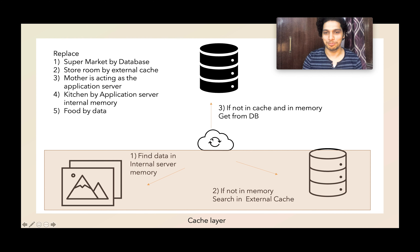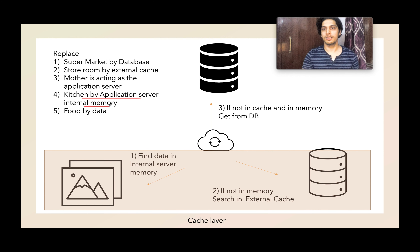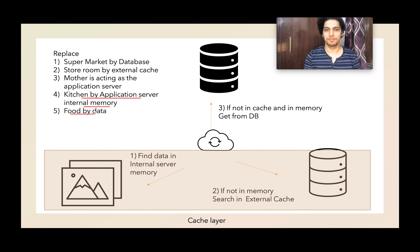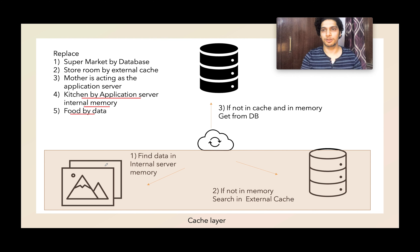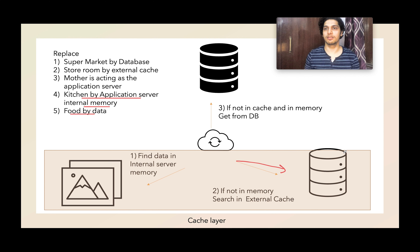Let's replace the storeroom with the external cache, and the mother is acting as the application server — she is the controller. The kitchen is acting as the in-memory storage of the application server, and food can be replaced by data. So how does the application server behave? It tries to find data in its own memory inside the application server. If the data is found, that's well and good — continue the processing. If it is not there, it will communicate with the external cache, which could be Redis or any external cache in your system. This complete layer is acting as a caching layer.